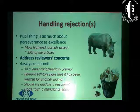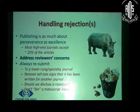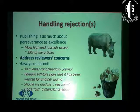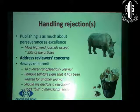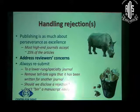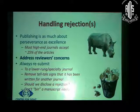In spite of all these precautions, we might get rejections — we all do get rejections. Publishing is as much about perseverance as about excellence, because most high-end journals have an acceptance rate of about 25% or less. The attitude to rejection should be different — we should take it that we have given our paper to a top-rated authority for review and received their comments. We can address those comments and concerns, and submit to probably a lower-impact or specialty journal as the case may be. We should remove any title signs that the paper has been written for another journal. There is a controversy on whether we should disclose the rejection or not.